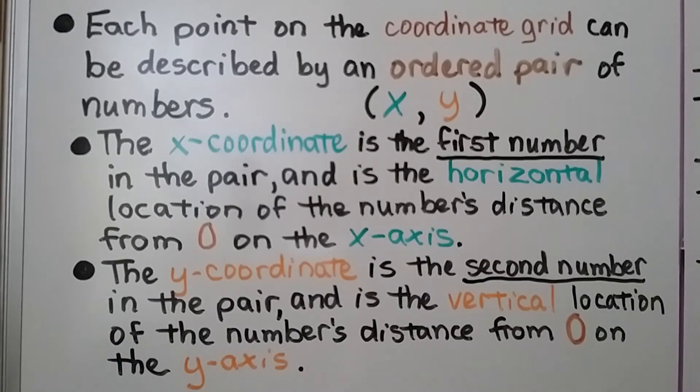Each point on the coordinate grid can be described by an ordered pair of numbers, x and y. The x-coordinate is the first number in the pair and is the horizontal location of the number's distance from zero on the x-axis. And the y-coordinate is the second number in the pair and is the vertical location of the number's distance from zero on the y-axis.